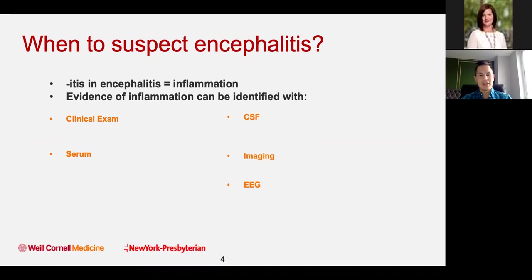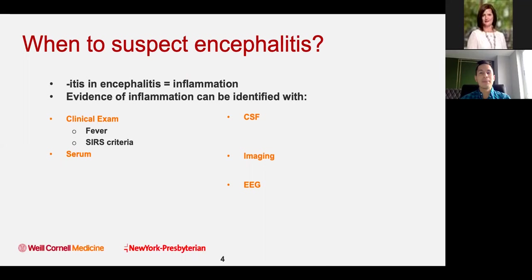The beginning is: when do you suspect encephalitis? Encephalitis is essentially inflammation of the brain. I use my basic clinical skills to think about the pretest probability that somebody will have encephalitis. Based on the exam — fevers, if they have SIRS criteria, hypotensive, tachypneic, tachycardic — those kind of clue me into whether this could be some sort of inflammatory condition.